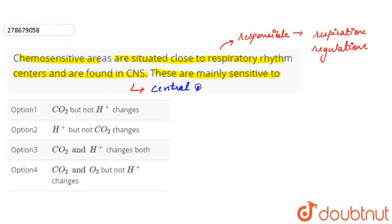We need to identify which of the four options they are mainly sensitive to. So as we said that they are responsible for regulation of respiration, it requires CO2 and hydrogen ion changes both. So option 3 is our correct answer, correct option, as we can say that these both are responsible for activation of this system or center.